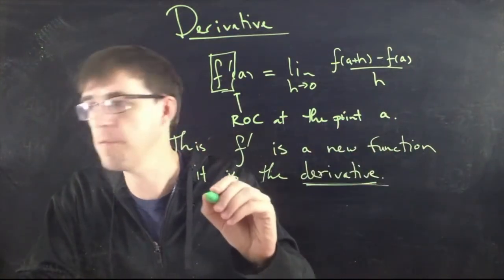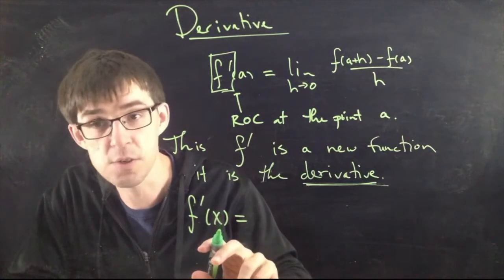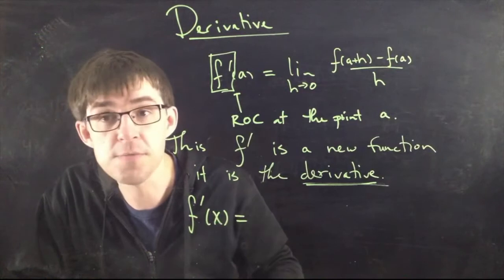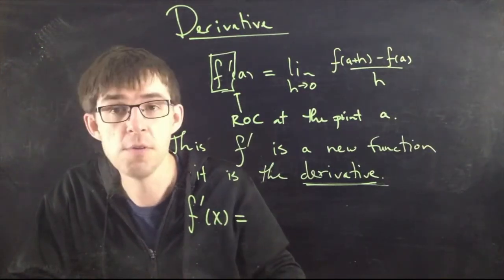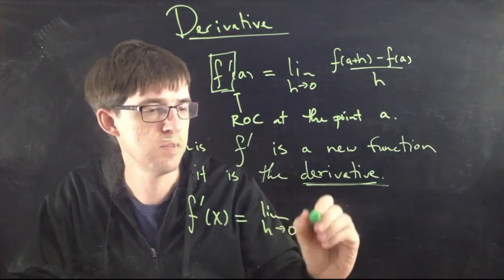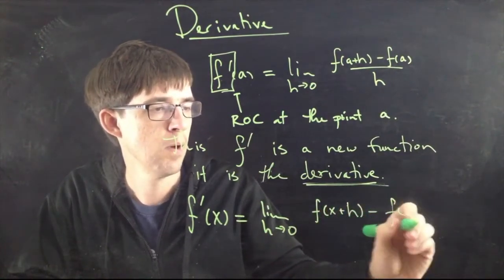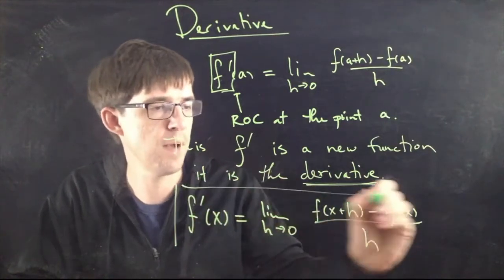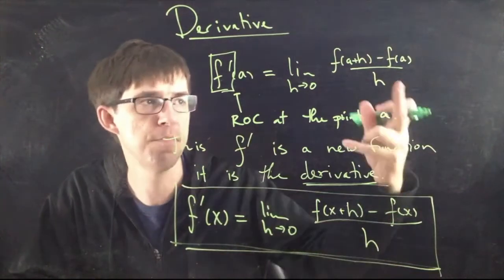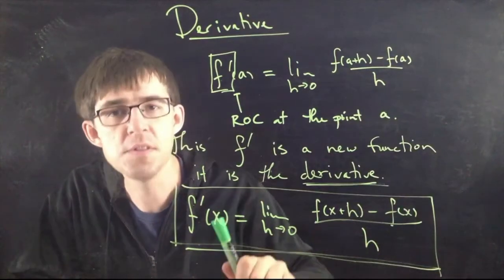So I'm going to write another formula for the derivative, but this is just the same formula. The only difference is I'm going to write x here to emphasize the fact that this f' is now a new function and it also has values. Whatever x you plug in, you get a value for f'(x). And so I'm going to write the same thing, only I'm using x instead of A. It's really the same. This right here is the definition of the derivative. I'll put it in a box. You should memorize this, although I already told you to memorize this, so it's the same, just with x's in there instead of A's.